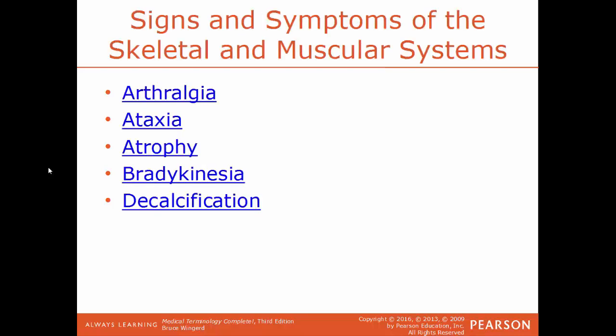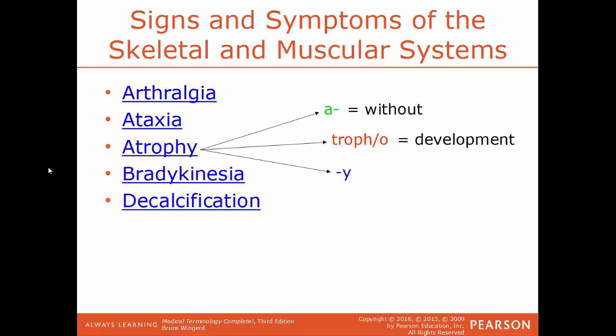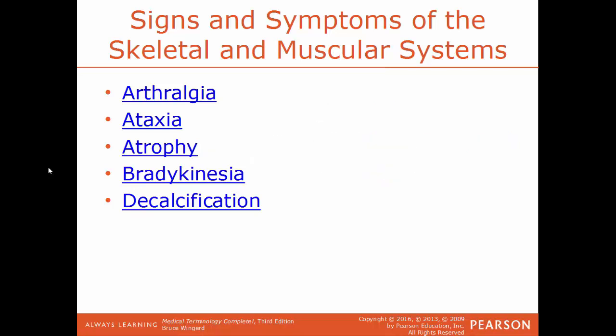Signs and symptoms of the skeletal and muscular systems: arthralgia is pain in a joint. Ataxia is a loss of control over body movements, usually a total loss. Atrophy — A means without, tropho means nourishment or development, Y means process of — so atrophy is the process of having no development, when muscles waste away from lack of use. Bradykinesia means slow movements, often associated with Parkinson's disease, where the body can't adjust position because it moves too slowly.